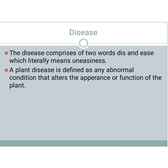First you have to know what is disease. The term disease comprises of two words: 'dis' and 'ease', which literally means uneasiness. Plant disease means some abnormal condition that happens in a plant which alters the appearance or function of the plant.